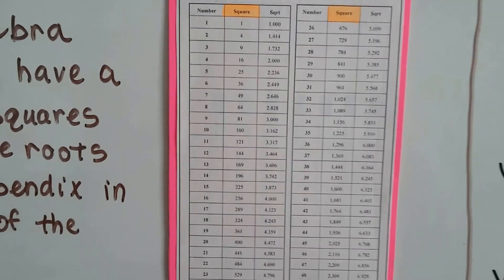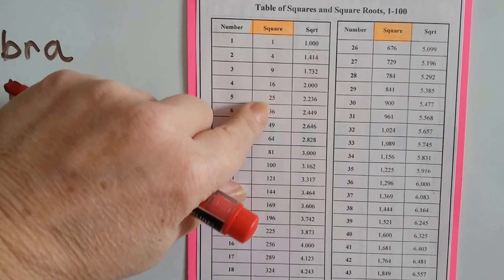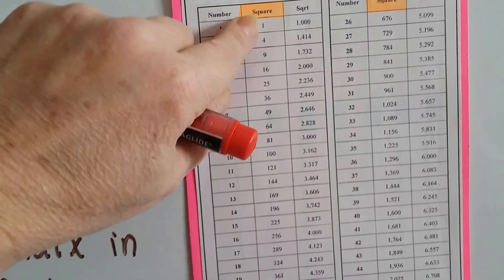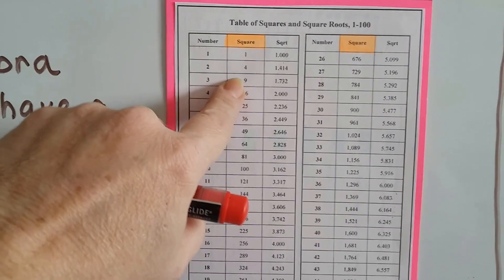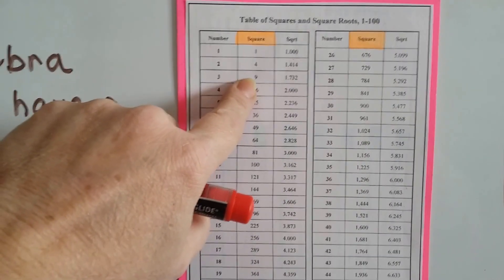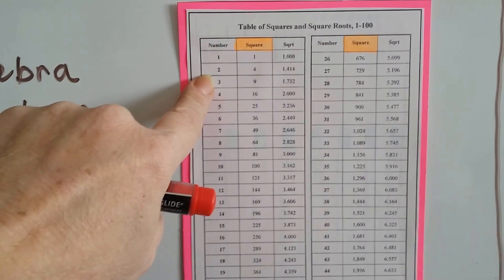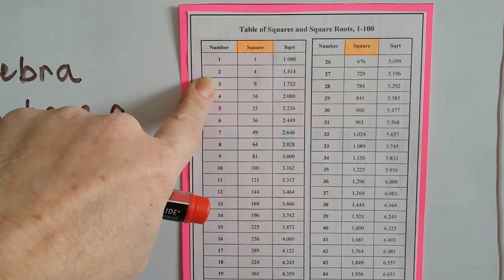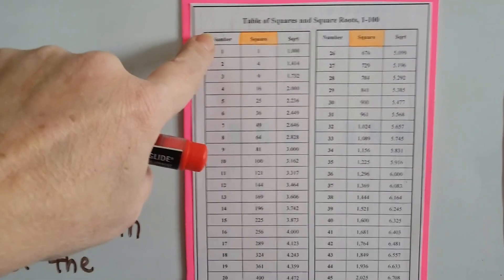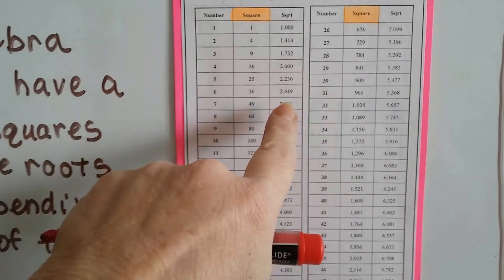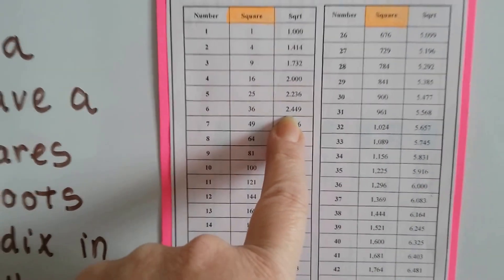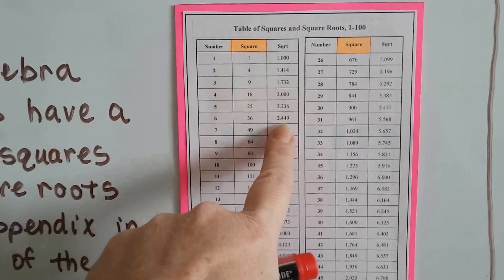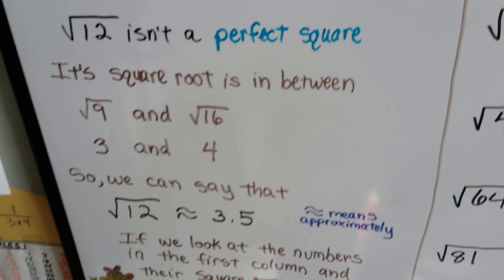Let's try it with a different number. I don't see any perfect squares for the number 6 in the middle column. So what would be the square root of 6? Well, it's in between 4 and 9, so it's going to be in between 2 and 3 — probably about 2 and a half or so. Then we can go down to the number 6 and skip over to the third column: it's approximately 2.449. So we were close at about 2 and a half. Remember, you have to use the approximate symbol if it's not a perfect square.